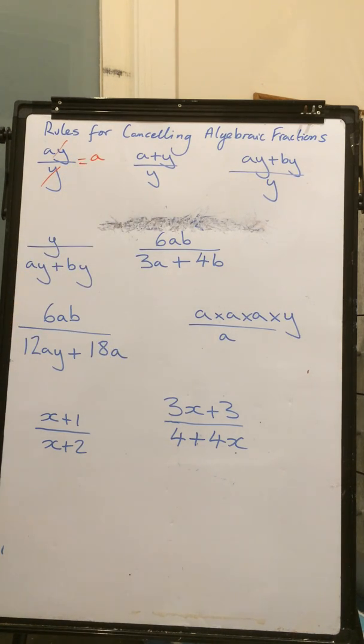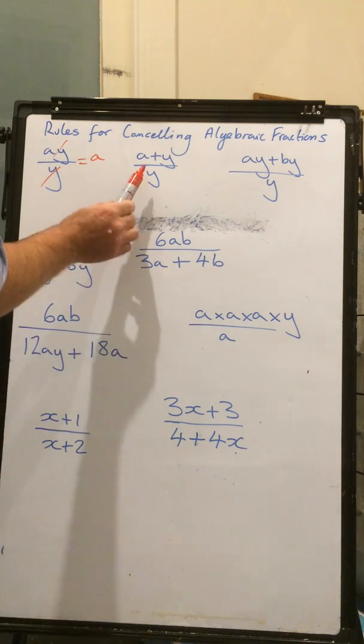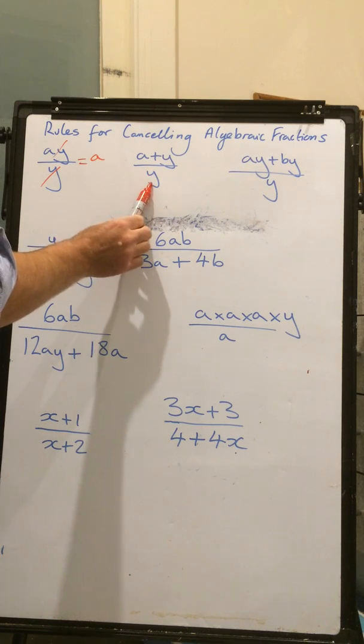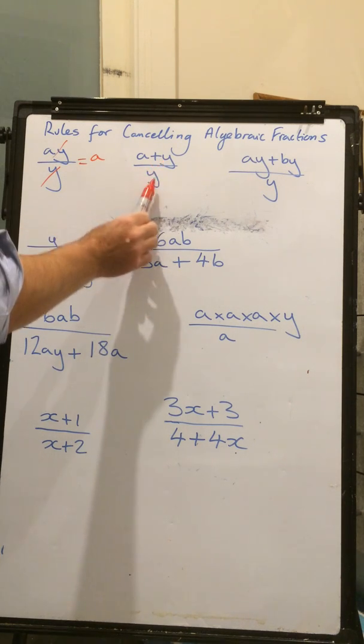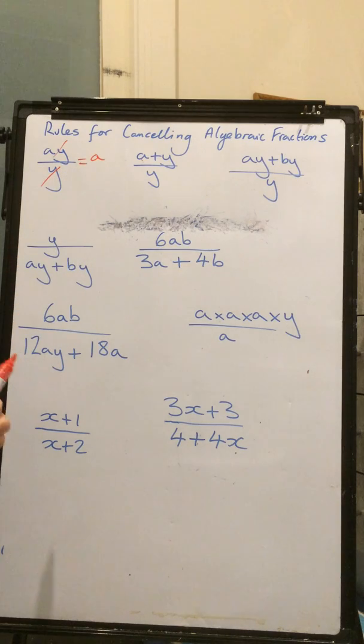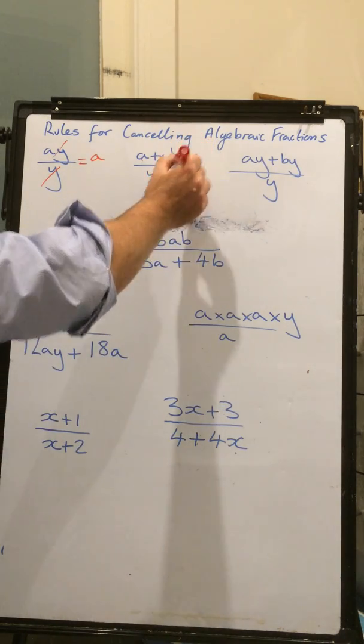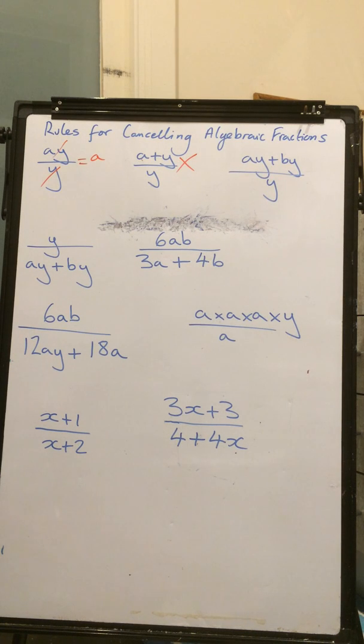Whereas in the next one, we've got a plus y over y. So, we naturally think, okay, fine, I'll just cancel out the two y's. No, you can't do anything with this here. The reason you can't do anything with this is for this y to be able to cancel out that y, there also has to be another y in that term there, in the a. So, we cannot do anything with that.